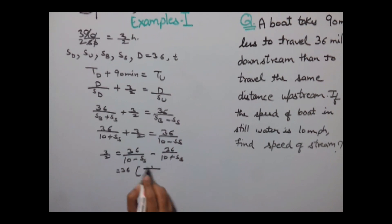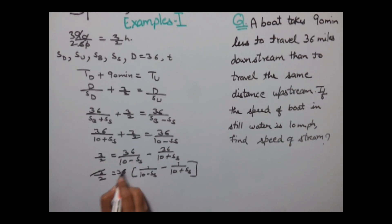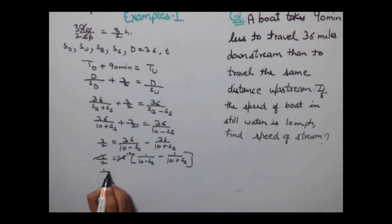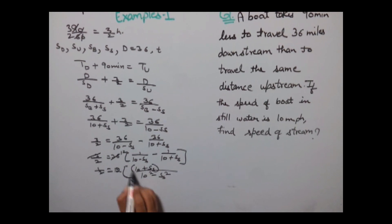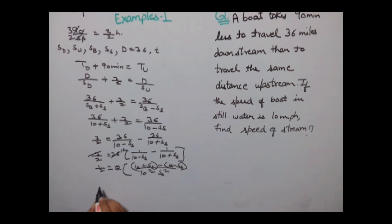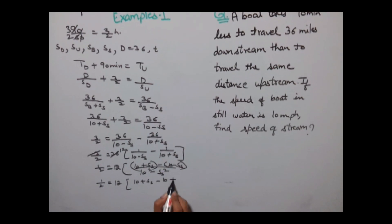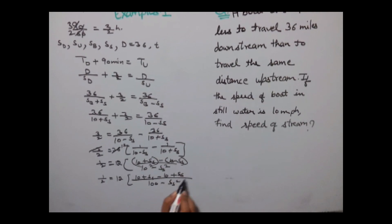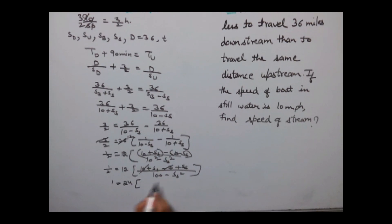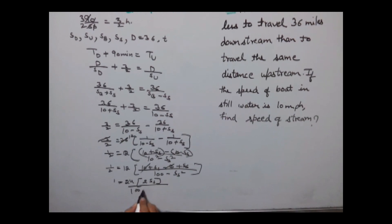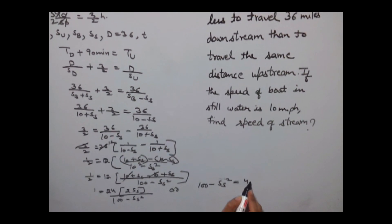Taking 36 common: 3/2 = 36 × [1/(10 − SS) − 1/(10 + SS)]. Taking LCM as (100 − SS²): 1/2 = 12 × [(10 + SS − 10 + SS) / (100 − SS²)], which gives 1/2 = 12 × [2·SS / (100 − SS²)]. Simplifying: 100 − SS² = 48·SS.